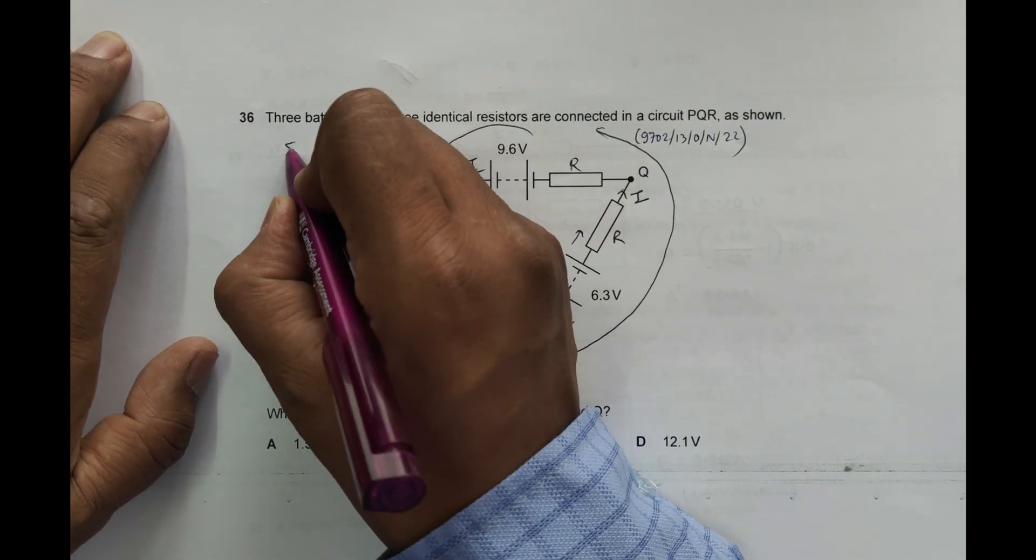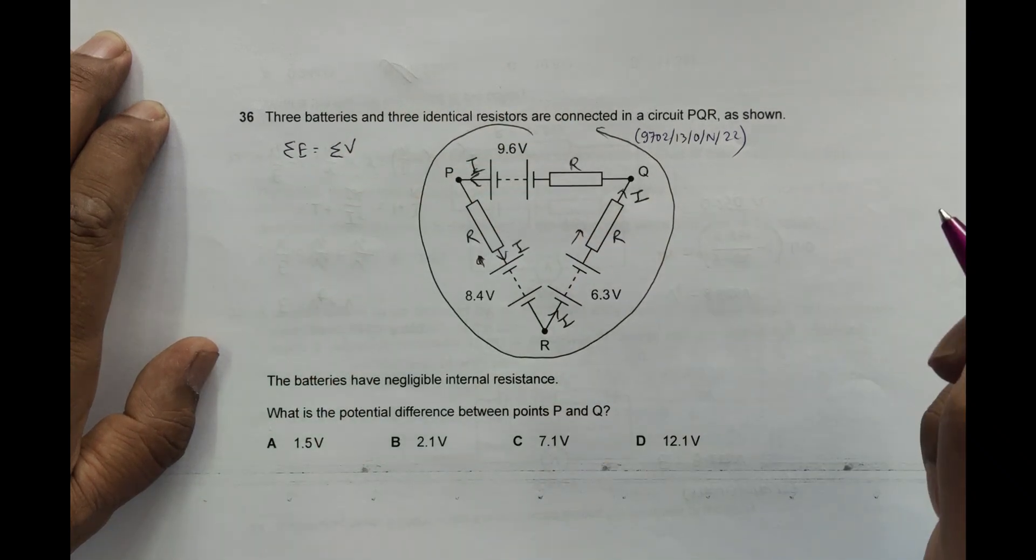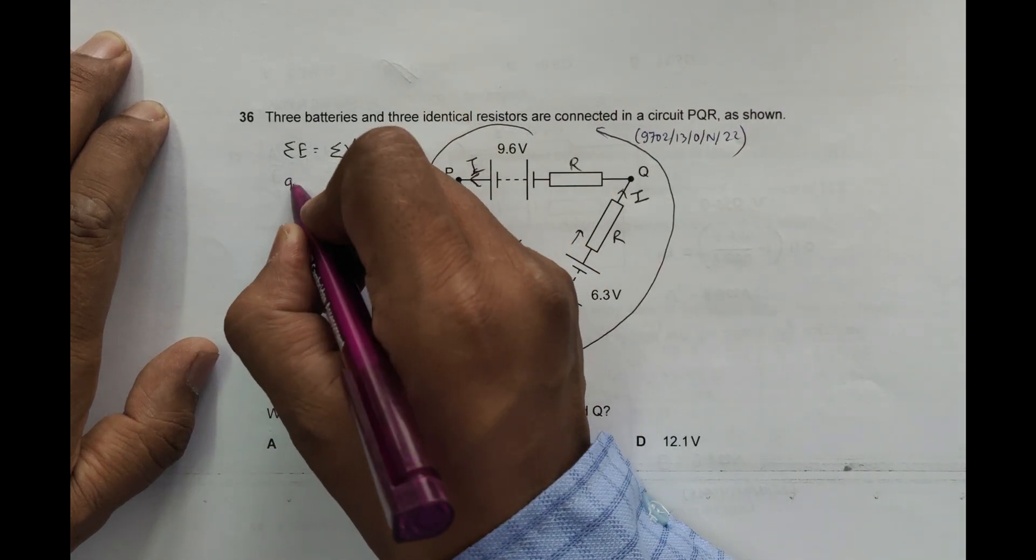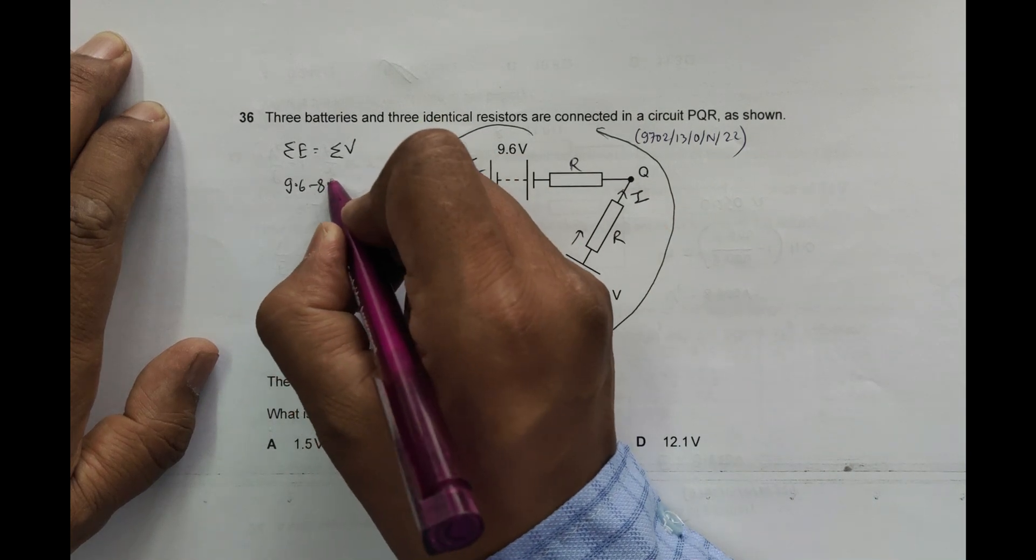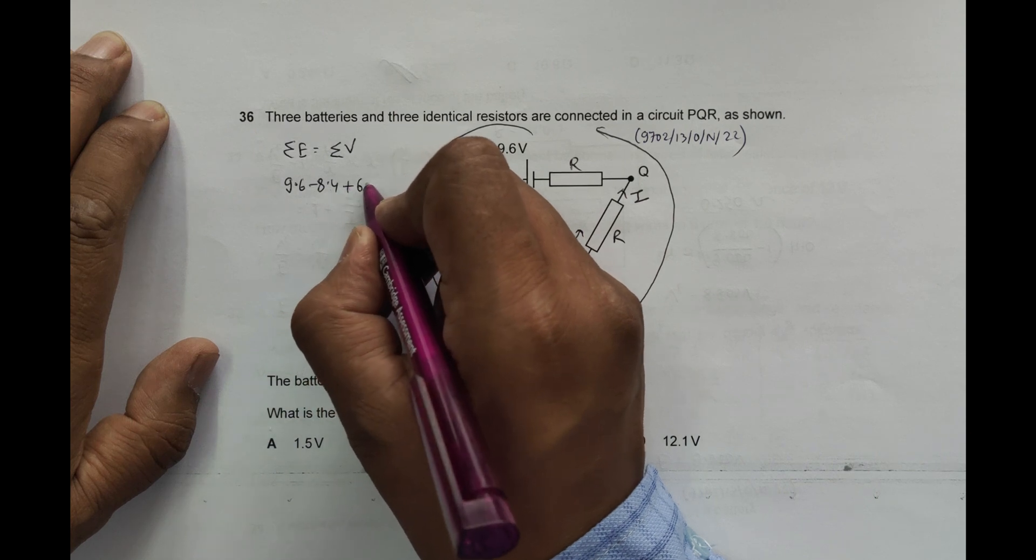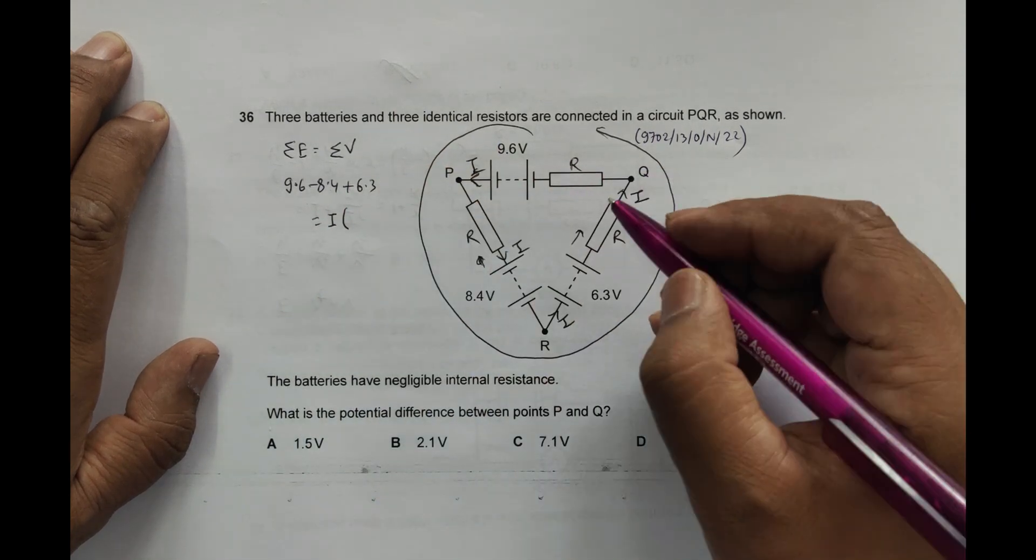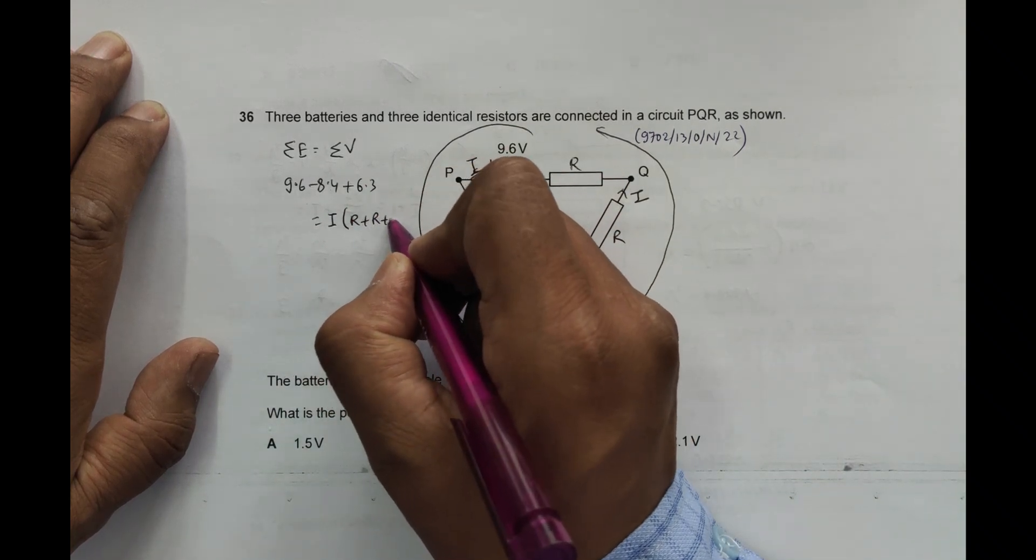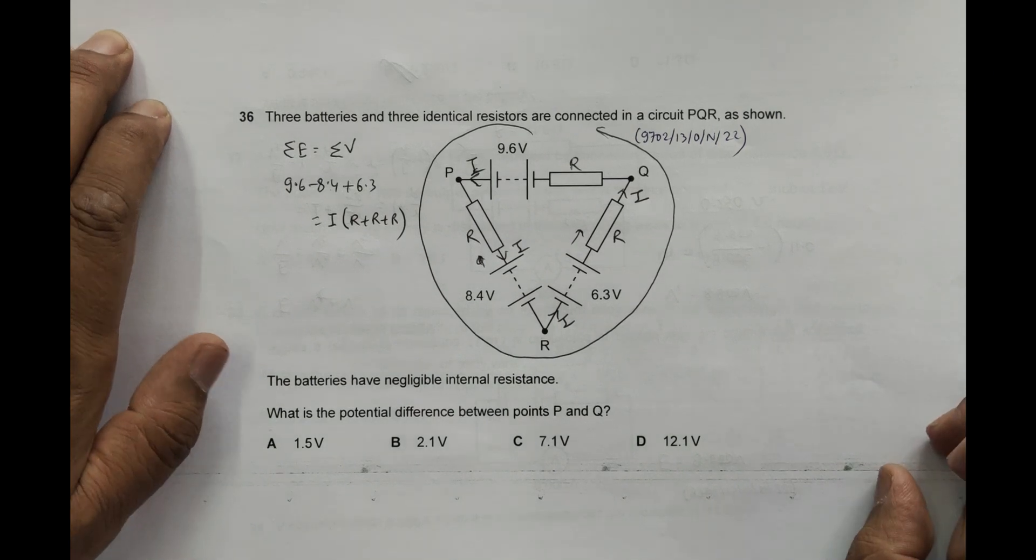Which says that the summation of E is equal to summation of IR. So this should be equal to 9.6 - this is opposing so it's minus 8.4 - and this is supporting so plus 6.3, equal to the current into sum of the resistances, so R plus R plus R. Sum of EMFs equals I into sum of resistances.